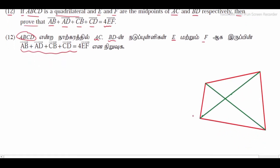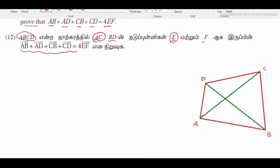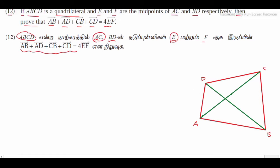I already have a quadrilateral drawn, so I will name it: A, B, C, D. If you look at AC and E, then A to C, I will mark the midpoint. So I will mark E and F. The midpoint of BD is F.